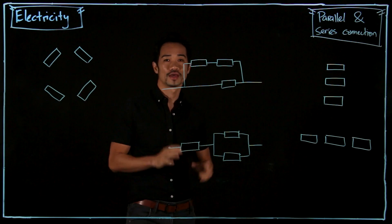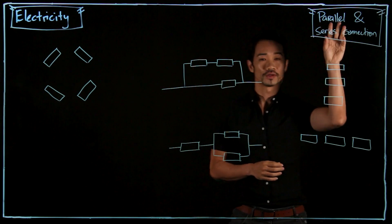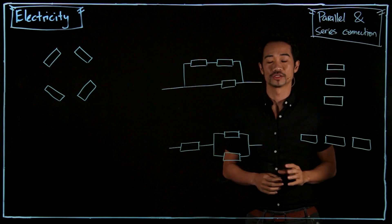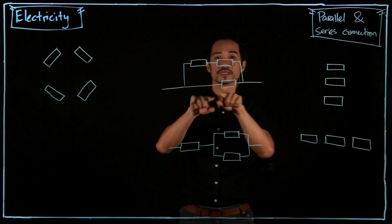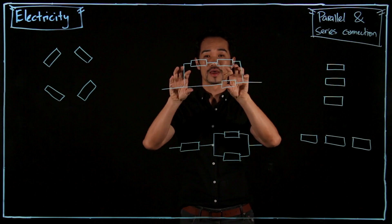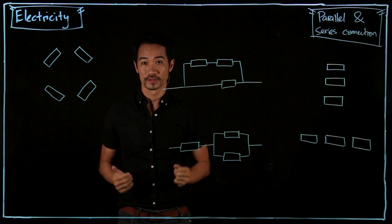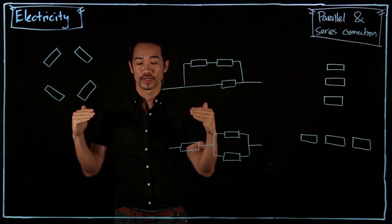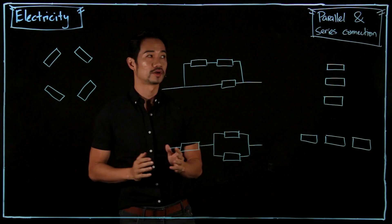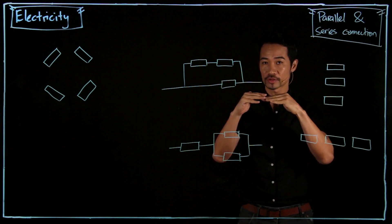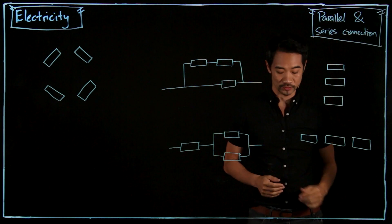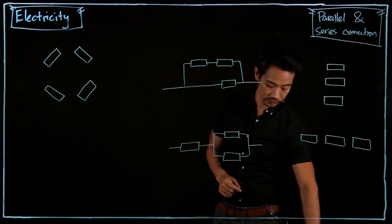Today we're going to continue on electricity and we're going to talk about parallel and series connection. So in an electric circuit, there are different components and then we join them using wires. So there are two ways that we can join things together. The two ways are joining them in a parallel fashion and in a series fashion. So let's talk about parallel first.